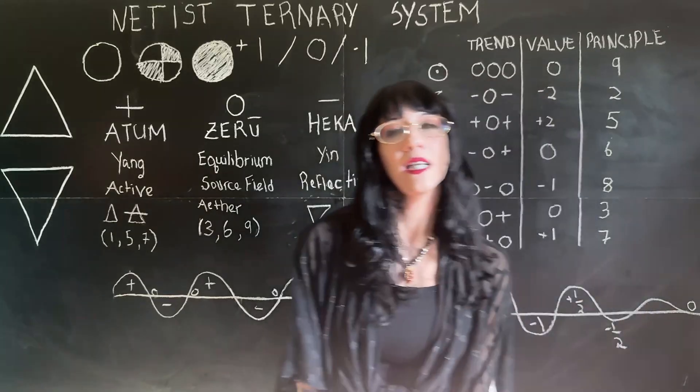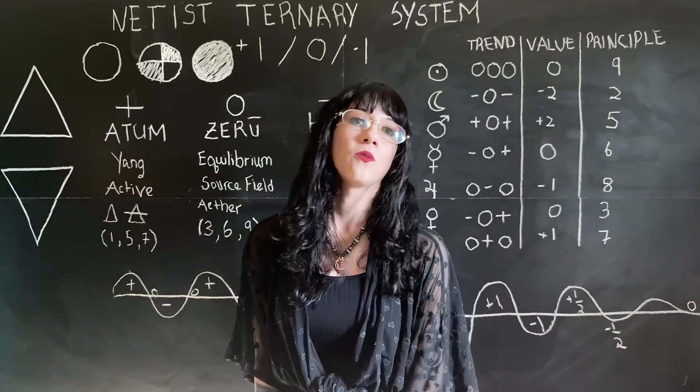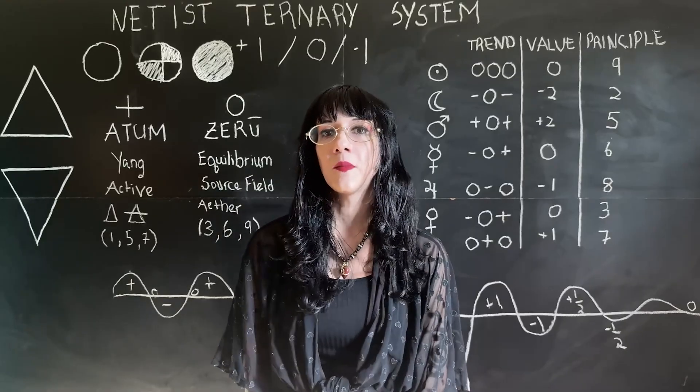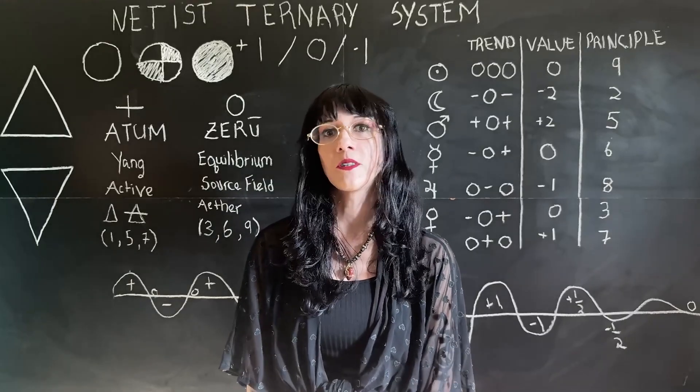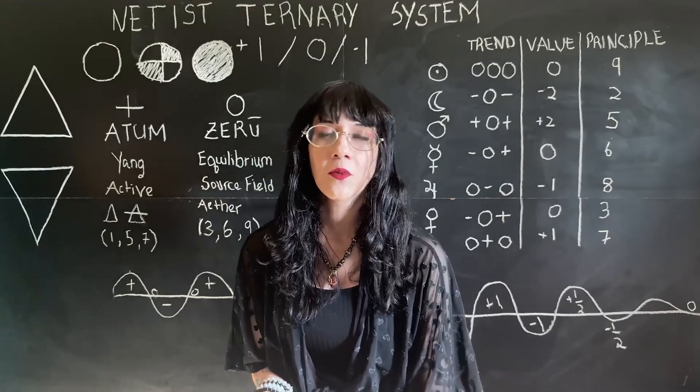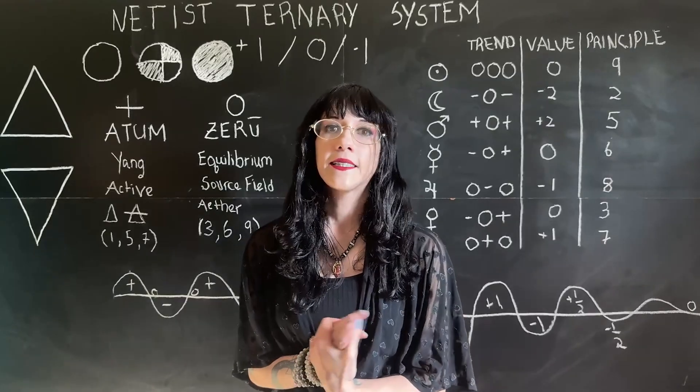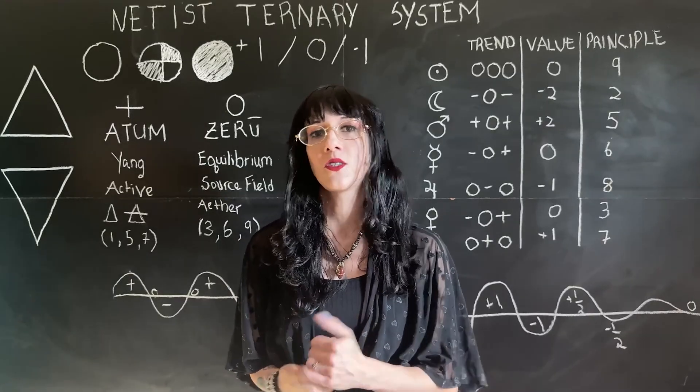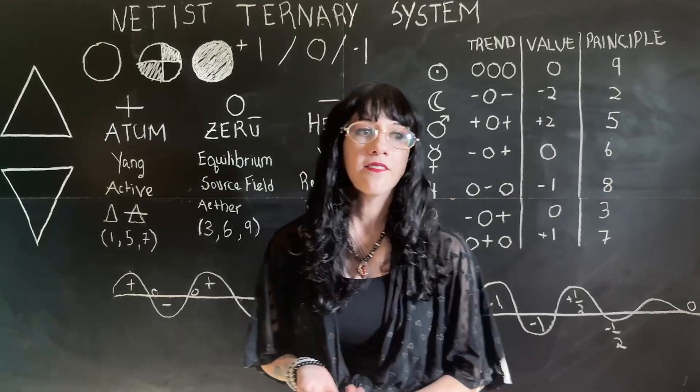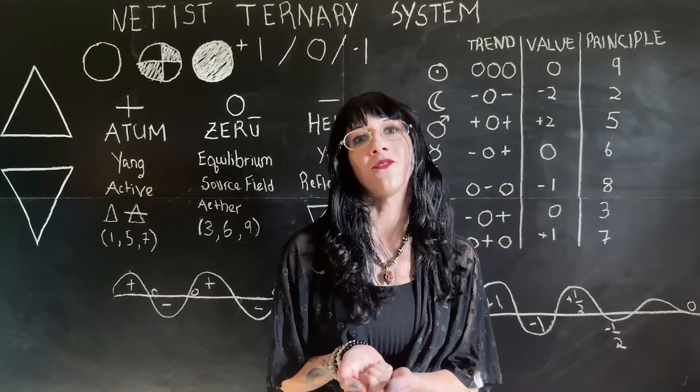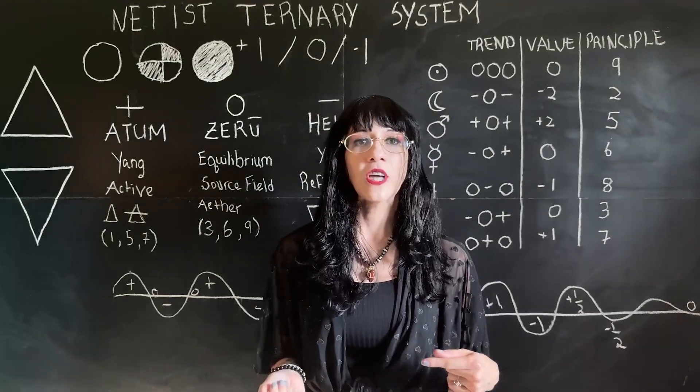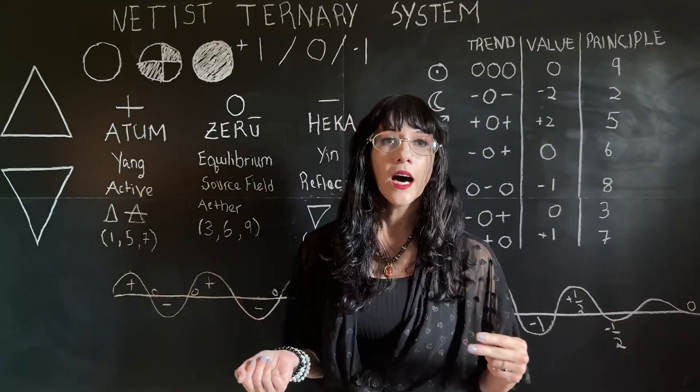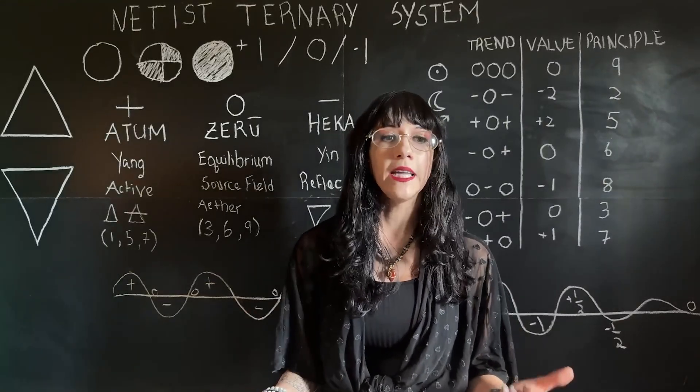So why is ternary important? Why should we not use binary? Well, binary limits us to two states, true or false. And in the real world, it's not really all that effective for tracking things like life habits, for tracking waveforms, for tracking things like rise, fall, or stay, yes, no, or wait, expansion, contraction, or rest.